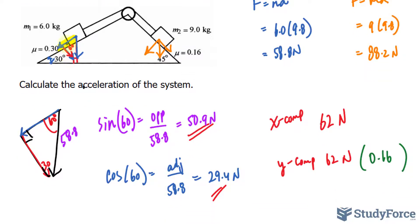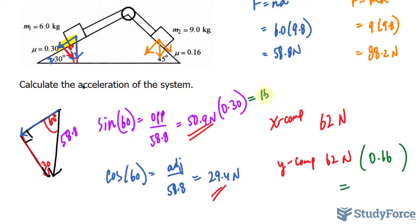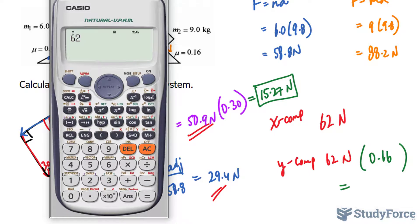So for this one, it was 50.9. We will be multiplying that number by its coefficient of friction being 0.3. So let's multiply these out, and I hope it's not getting too messy for you. 50.9 times 0.3 gives us 15.27 newtons. Let's multiply these, 62 times 0.16, and that gives us a total of, let's say, 10 newtons.